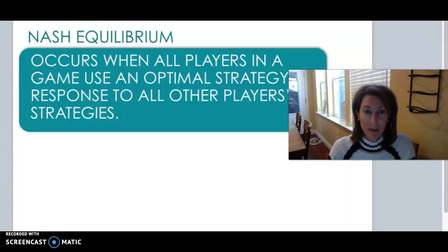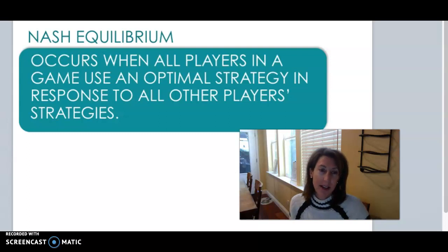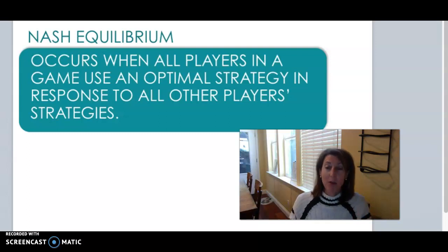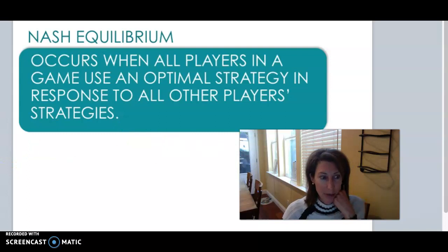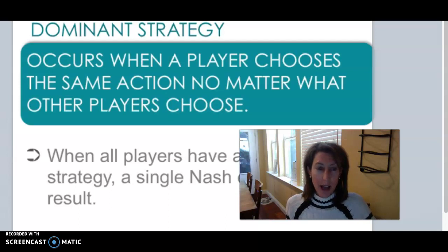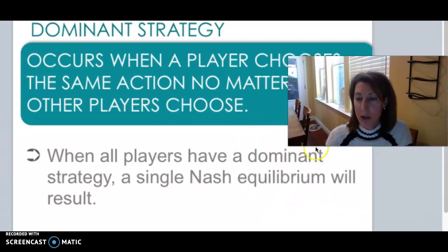We can learn about the Nash equilibrium, named after the famous mathematician John Nash. Maybe you saw A Beautiful Mind with Russell Crowe — he was the one who developed this mathematical equation for solving for equilibrium and won the Nobel Prize for it. The Nash equilibrium looks at interdependent firms making decisions and predicts what their optimal strategy will be, based on what other players would have done. A dominant strategy is when a player will choose the same action no matter what the other player chooses.